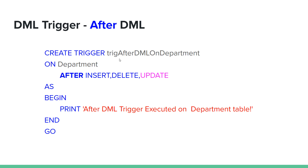For example, create a trigger on the department table — after DML on department. After insert, after update, and after delete, the trigger will execute on the department table.